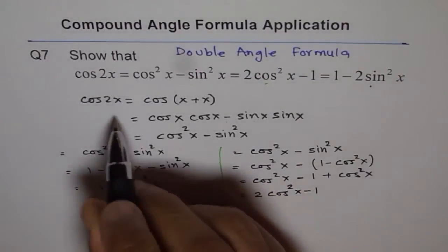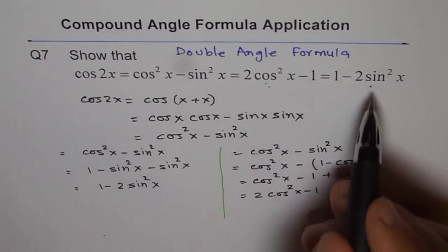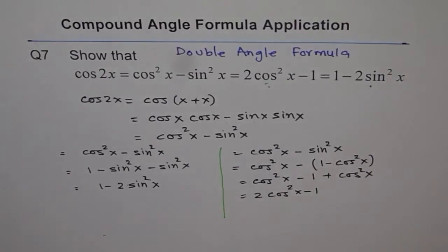This cos square x can be written in either form. So it has three formulas to use. Depending on what kind of result you are looking for, you can use either of these three. That's a very important identity or formula and it's called double angle formula.